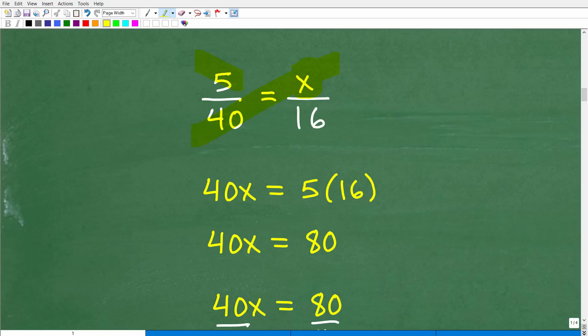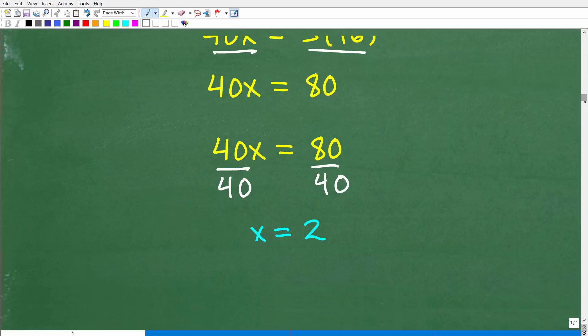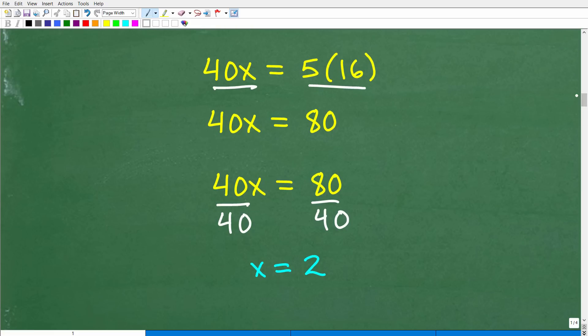So what we're going to do is we're going to cross multiply. We're going to use a cross product. So let's go ahead and go this way. So 40 times x is 40x. And then 5 times 16 will be 5 times 16. Okay, so let's go ahead and take the next step here. So we have 40x is equal to 5 times 16, which of course is 80. So how do I solve for x when I have 40x is equal to 80? Easy. I just divide both sides of the equation by 40. And you're going to get x is equal to 2, right? 80 divided by 40 is 2. And that is the answer.